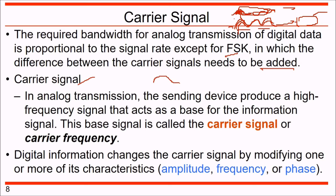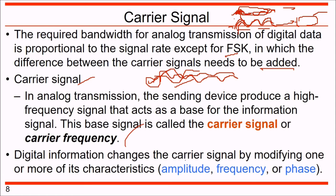In analog transmission, the sending device produces a high-frequency signal that acts as a base for the information signal - this base signal is called the carrier signal or carrier frequency. Digital information changes the carrier signal by modifying one or more of its characteristics. A signal can have amplitude, frequency, or phase, so you can change the amplitude, frequency, or phase to encode digital information.